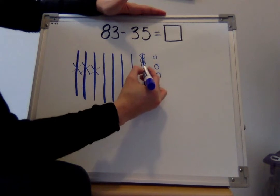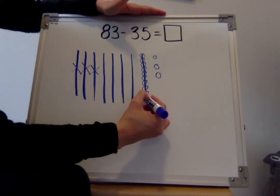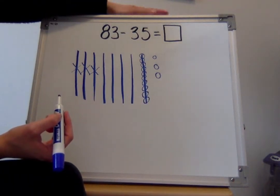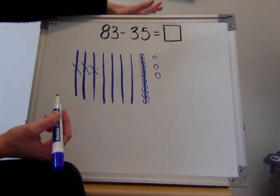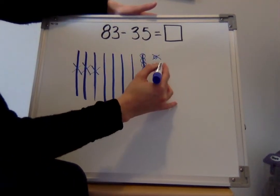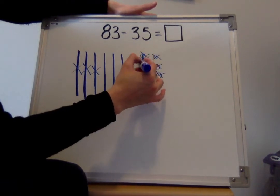1, 2, 3, 4, 5, 6, 7, 8, 9, 10. Ooh, now we have more than enough ones to take away. Now I can take away 5. Let me start here. 1, 2, 3, 4, 5.